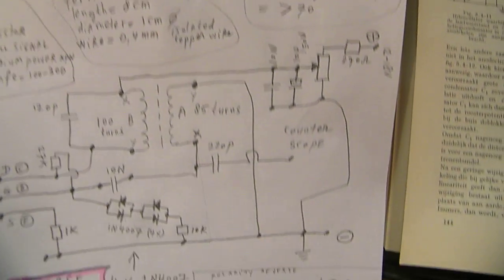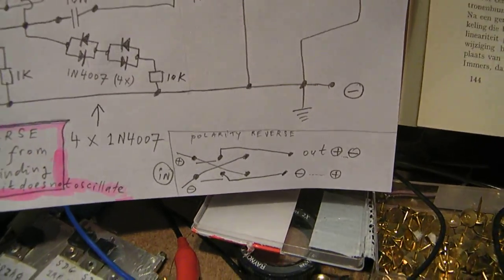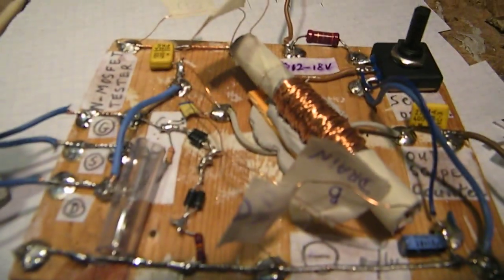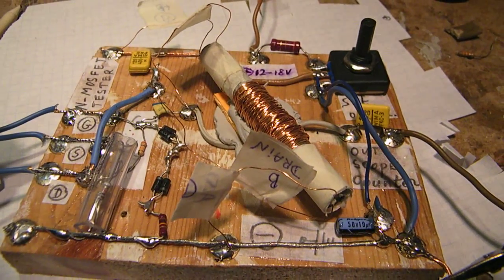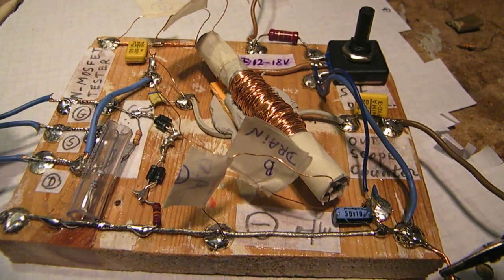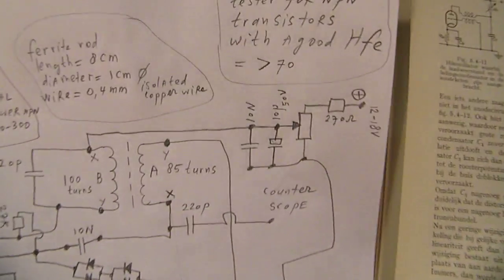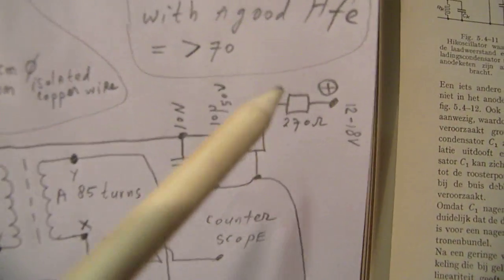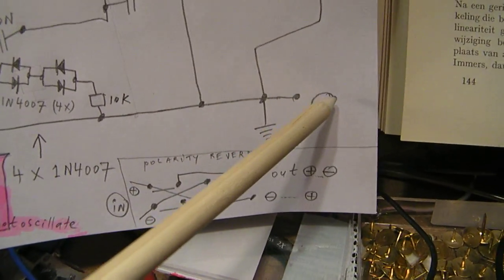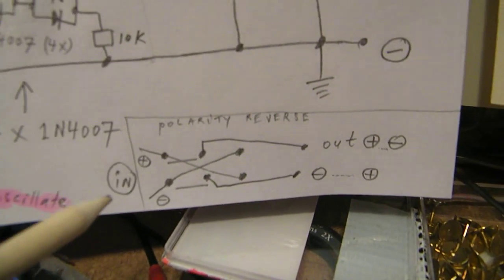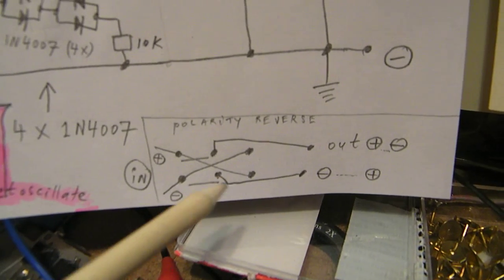There are a few more things to tell. Of course, this is only the N-MOSFET tester. But when you want to test P-MOSFETs, the whole voltage must be reversed. So this must be negative and this must be positive in that case. You can use a polarity reverse switch.